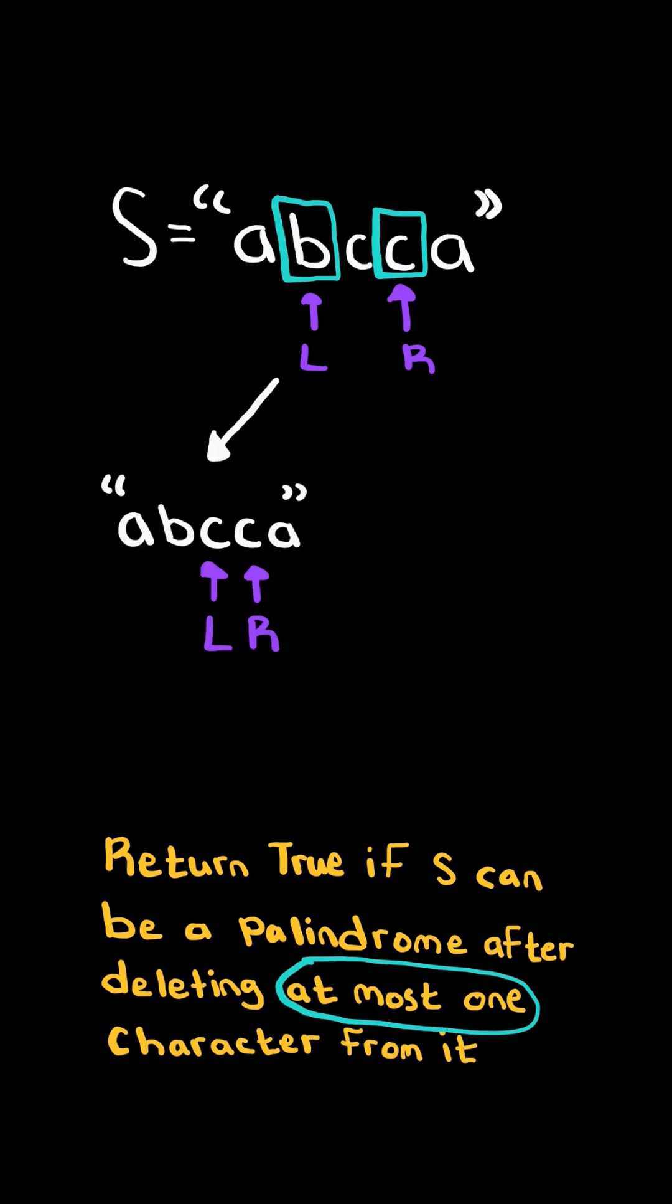We can choose to delete the left one by advancing the left pointer by one, or we can choose to delete the right one by decrementing the right pointer by one. Now, let's continue the algorithm in each of the individual cases.